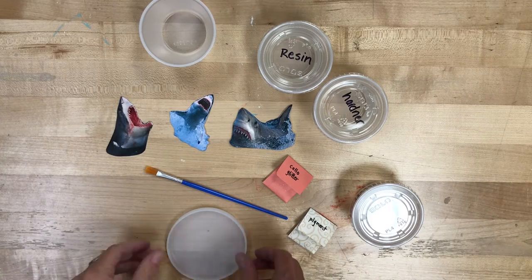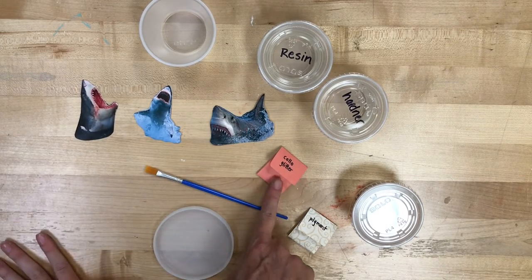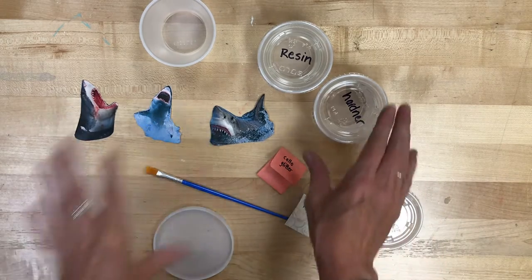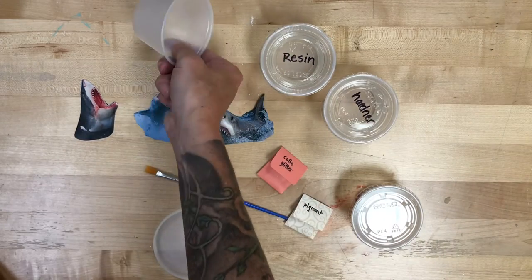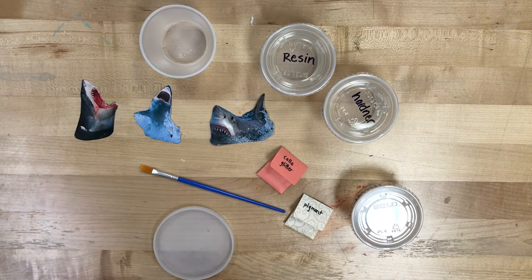So without any further ado, shark coasters. Let's take a look and see what you've got in your box. Your coaster mold, your sharks, you'll pick one, cellophane glitter, pigment, Mod Podge, your resin mixing, and then you should have two cups to mix it in. You'll have a paintbrush and some stir sticks.